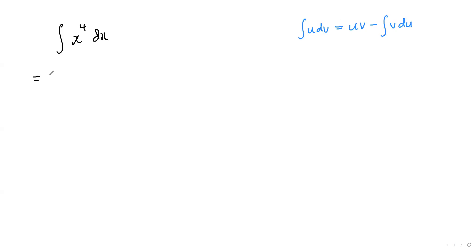Let's think about how we can split x to the power of four into a product of two functions. Maybe I'll try x to the power of one and x to the power of three, and then we can see where this goes. We're going to let one of them be dv — so let x to the power of one be dv. So let's say this is dv and this is u.